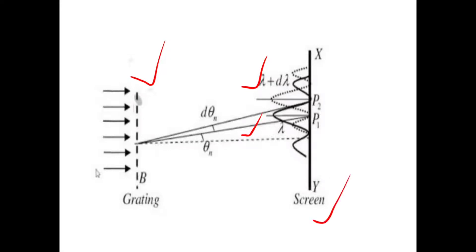Here I am going to explain using the telescope and screen. P1 is the primary maximum of the spectral line of wavelength lambda at diffraction angle theta_n. P2 is the primary maximum of the wavelength lambda plus d_lambda at an angle theta_n plus d_theta_n.